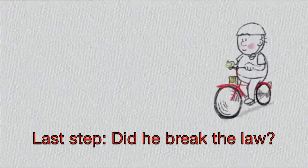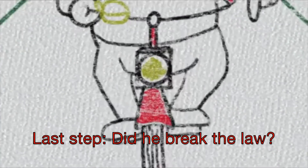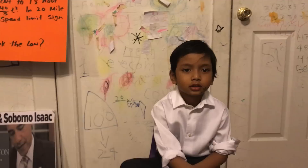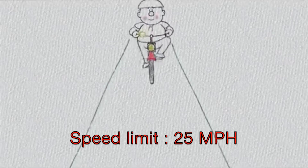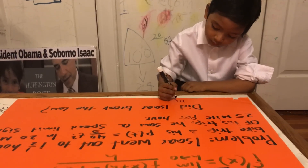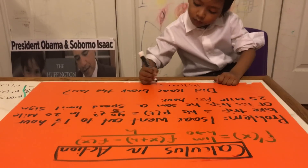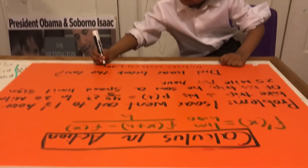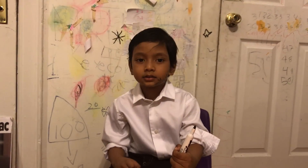Let me ask you a question, guys — did Isaac break the law or didn't he break the law? He broke the law, because he was moving at 32 mph past a 25 mph speed sign. Isaac actually broke the law because 32 mph is over 25 mph, which was the speed limit. That means Isaac was moving faster than the speed limit. Thank you for watching — don't forget to subscribe to Berry Science Lab. Next time I'll do E equals mc squared — that is above PhD level. Stay tuned, thank you.